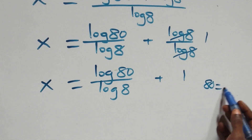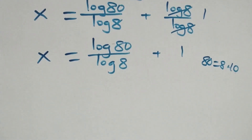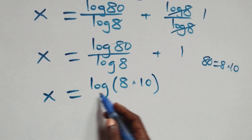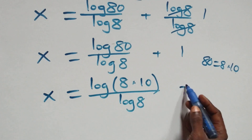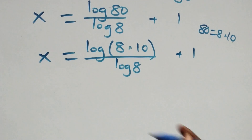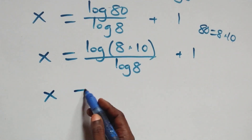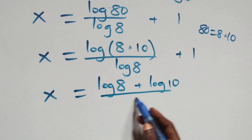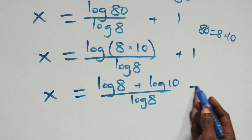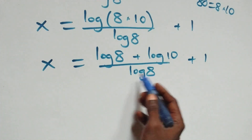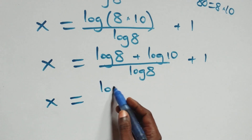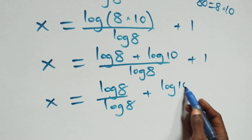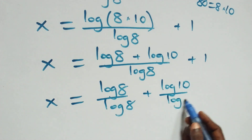We also write 80 as 8 times 10, so what we have becomes x equals log(8 × 10) over log 8, plus 1. Applying the product rule again: x equals log 8 plus log 10, all over log 8, plus 1. We separate into two fractions: x equals log 8 over log 8, plus log 10 over log 8, plus 1.